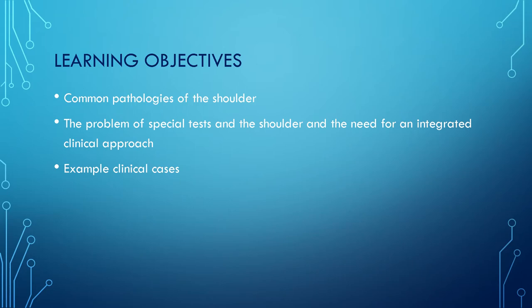In this presentation, I'm going to look briefly at the common pathologies of the shoulder, and then ask the question of how do we examine the shoulder in that context. We'll cover the specialist tests to look for those pathologies. Part of the problem is that it is a difficult diagnosis to make and we need an integrated clinical approach. I'll then go through some example clinical cases at the end.